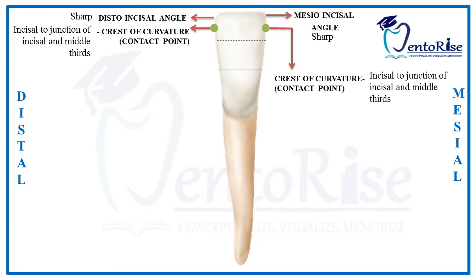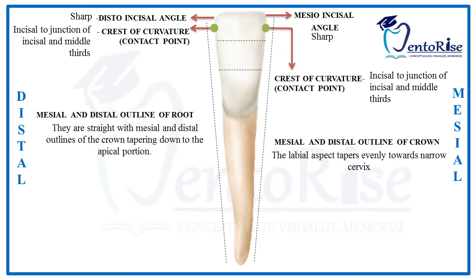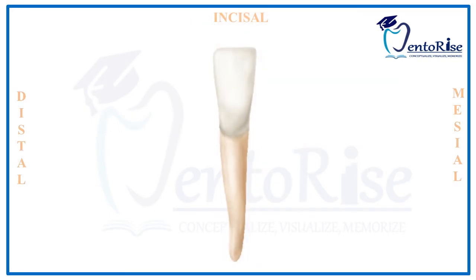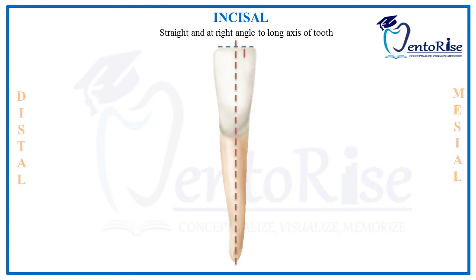Please check out our video on division of tooth into thirds if needed. Both the crown and the root taper as they reach the apex of the root. The incisal outline of a permanent mandibular central incisor is straight and is present at right angles to the long axis of the tooth. The root tapers as it moves apically, then takes a turn in the distal direction to end up in a pointed apex.